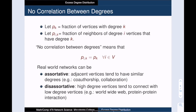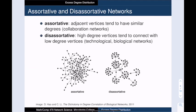There are other networks where high degree vertices tend to connect to low degree vertices. Those networks are called disassortative. Here is a visual example of both an assortative network and a disassortative network.